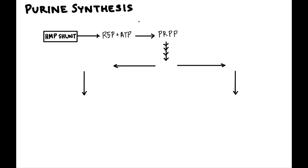The enzyme that does this is fittingly called PRPP synthase. This is the rate-limiting step in de novo purine synthesis, so you'll want to know this enzyme, as rate-limiting step enzymes often come up on the exam. The one big thing that inhibits this enzyme is purines — this is feedback inhibition. If you already have what you're trying to make, you don't need to make as much of it.